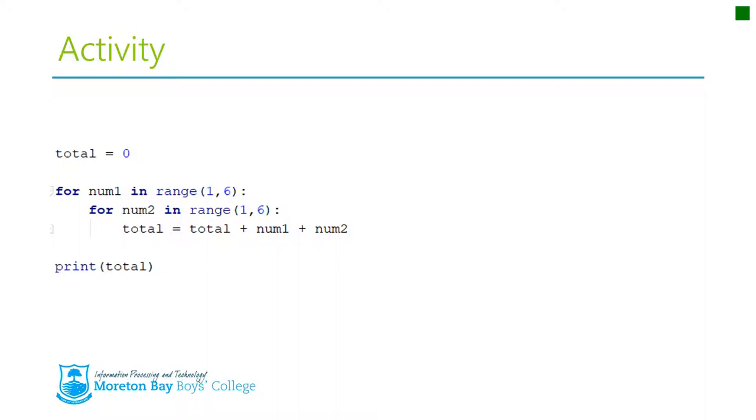And the first one is going to num1 and num2. So you're going to run through from one to six. Well one to five as we now know. And then for num2 from one to five. And then with this nested for loops in here the process is going to see total plus num1 plus num2 and then print the total.